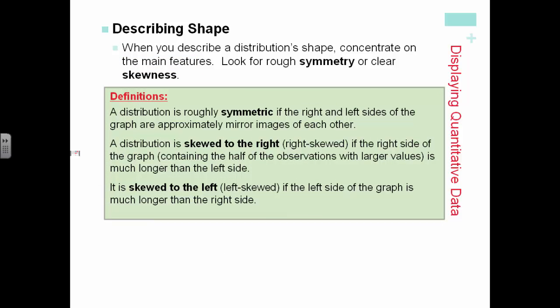So we check to see for describing a shape, symmetry, or skewness. We consider a distribution roughly symmetric if the right and left sides of the graph are approximately mirroring images of each other.